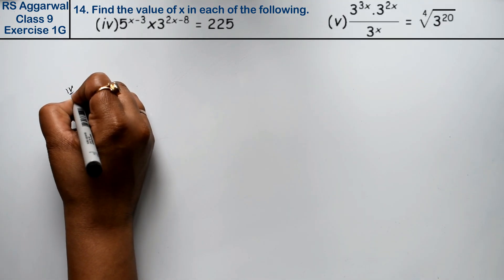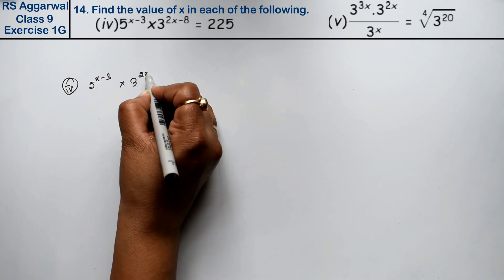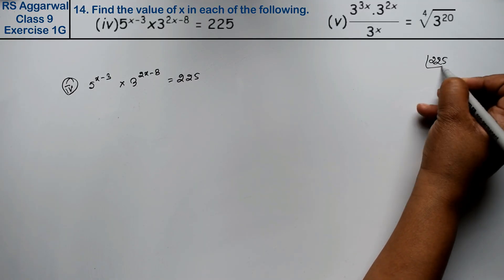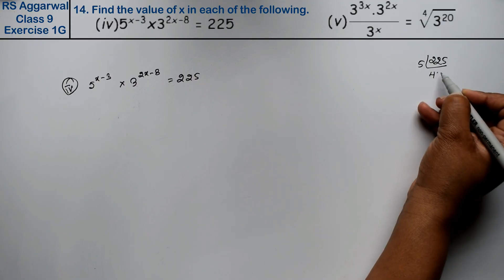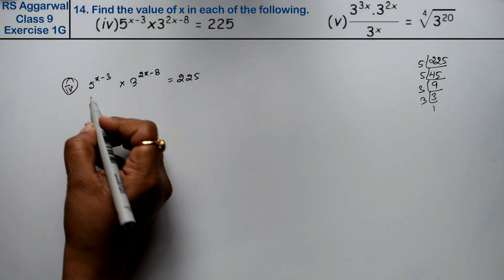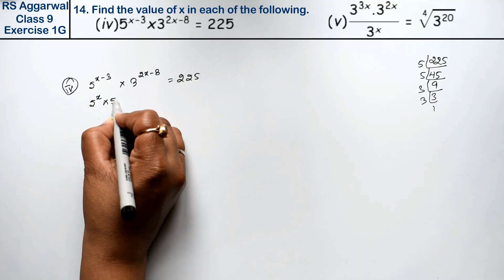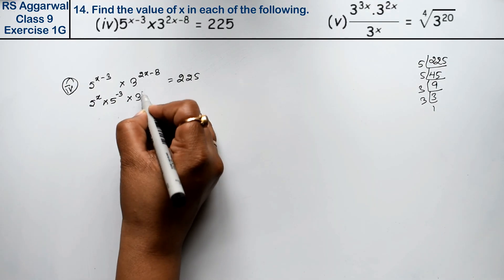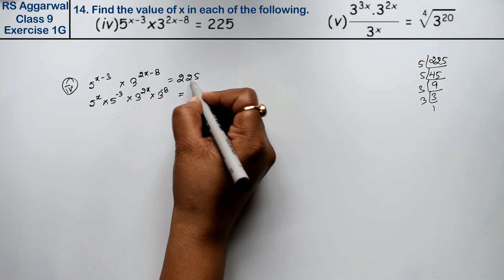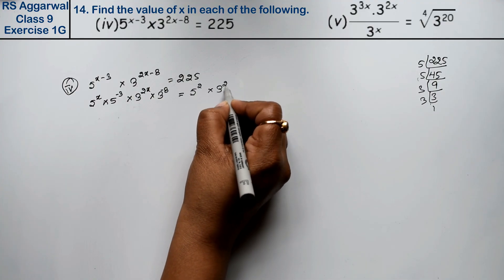Let's do the 4th part. The 4th part is: 5^(x−3) × 3^(2x−8) = 225. We can write 225 as 15 squared, and 15 = 5 × 3, so 225 = 5² × 3². We split the left side: 5^x × 5^(−3) × 3^(2x) × 3^(−8) = 5² × 3². Rearranging, 5^(x−3) × 3^(2x−8) = 5² × 3².